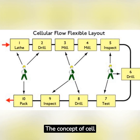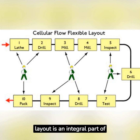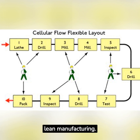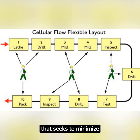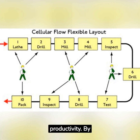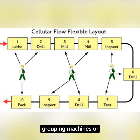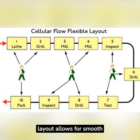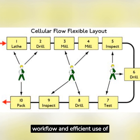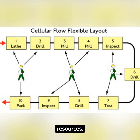The concept of cell layout is an integral part of lean manufacturing. It's a strategy that seeks to minimize waste while optimizing productivity. By grouping machines or workstations together, cell layout allows for smooth workflow and efficient use of resources.